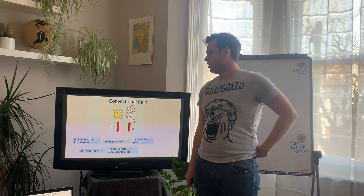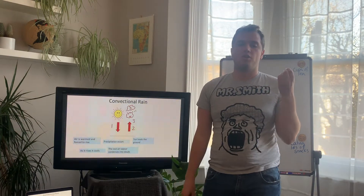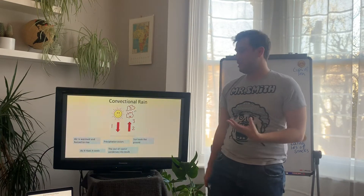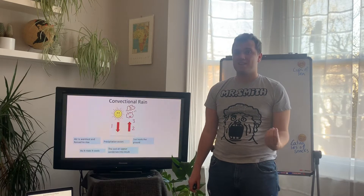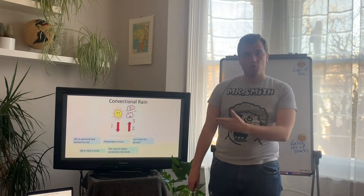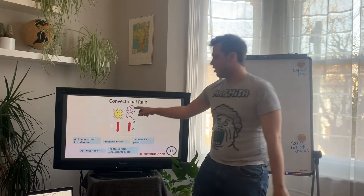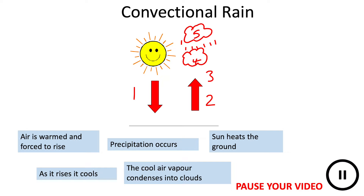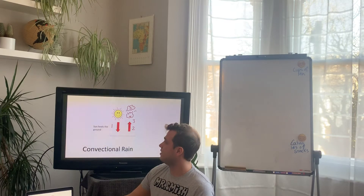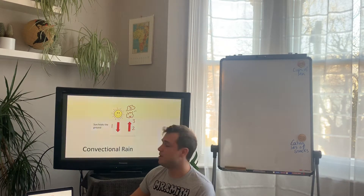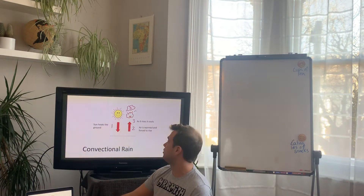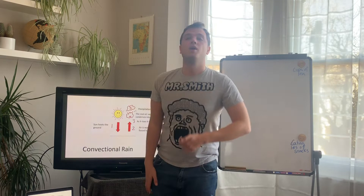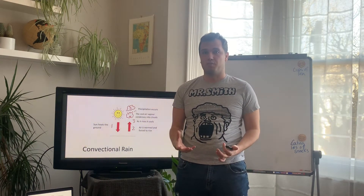Our next type of rainfall is convectional rainfall. This occurs when it's really, really hot — this is the type of rain we get on those summer days when it's beautiful and then it rains in the evening, short bursts of heavy rain. It's also the kind of rainfall found in the tropical rainforest. It's the simplest type: it's so hot that the ground gets heated up and then our process of rainfall occurs. Pause your screen and on your sheets match up the five annotations to the diagram. The sun heats the ground intensely, the air warms and is forced to rise, it cools, the vapor condenses into clouds, and we have precipitation.